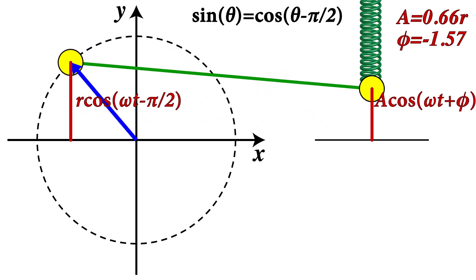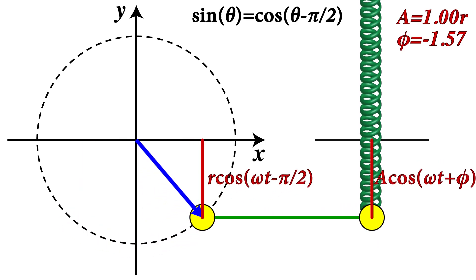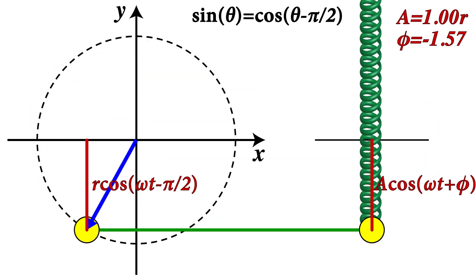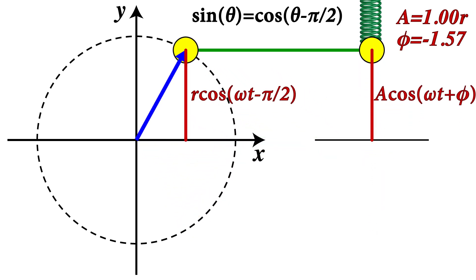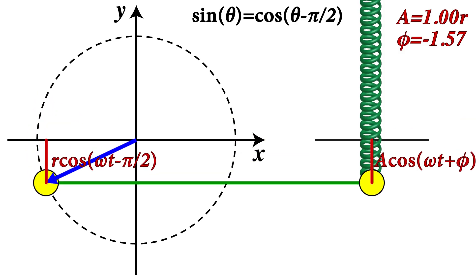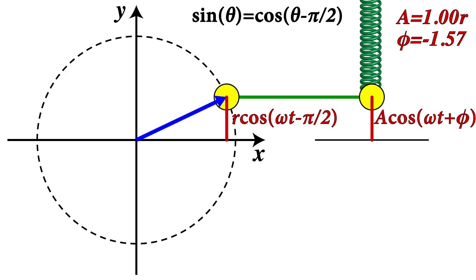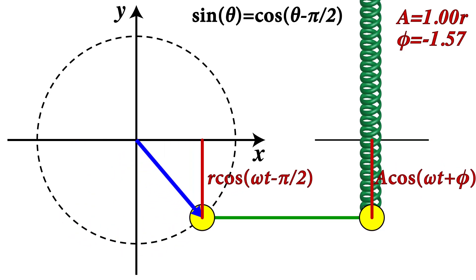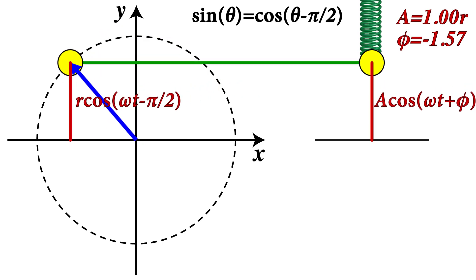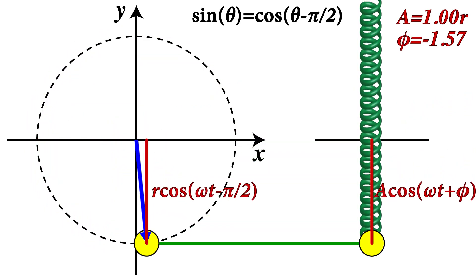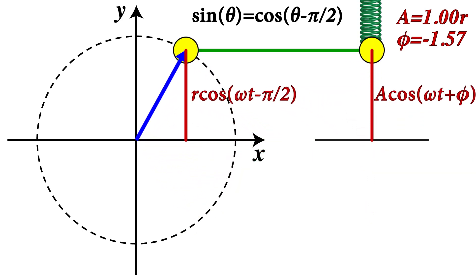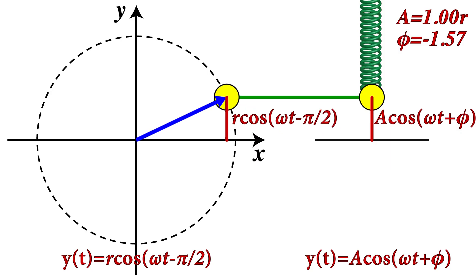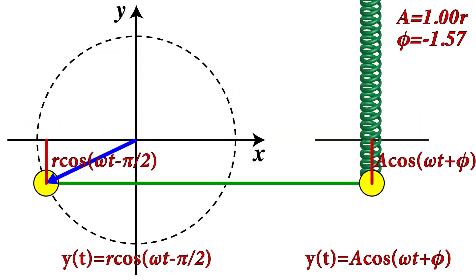The other parameter we haven't discussed is the frequency of the motion. We've set the angular frequency of the object on the end of the spring equal to the angular velocity of the object going around in a circle. If those were different, the two objects would be all over the place. Now with the oscillator having amplitude equal to the radius and initial phase equal to −π/2, we can see the two objects oscillating perfectly in phase with the same amplitude. This shows that simple harmonic motion is really just a one-dimensional projection of an object going around in a circle — which was the demonstration we started with.